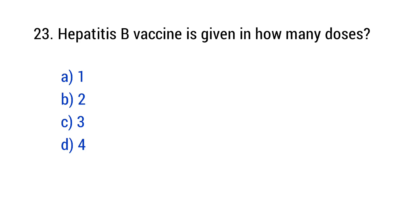Question number 23: Hepatitis B vaccine is given in how many doses? The right answer is option C — 3.